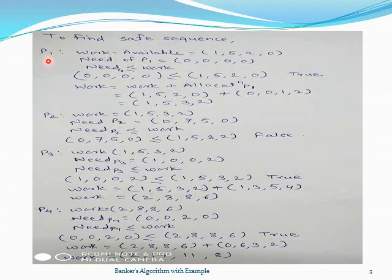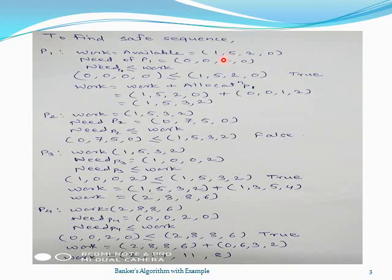Now we will see how to find the safe sequence. In order to find the safe sequence, we will check processes one by one: P1, P2, P3, P4, P5, and check the condition as per the Banker's Algorithm. Here we will consider one variable as work, where work equals available, and the value is [1, 5, 2, 0] as given in the problem.